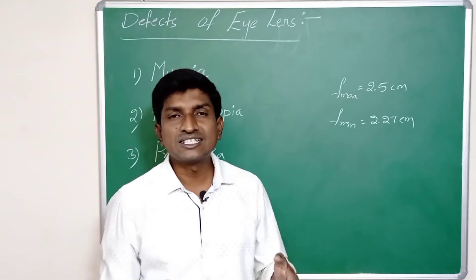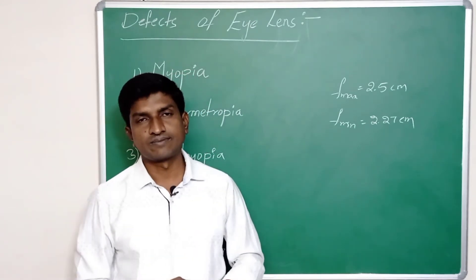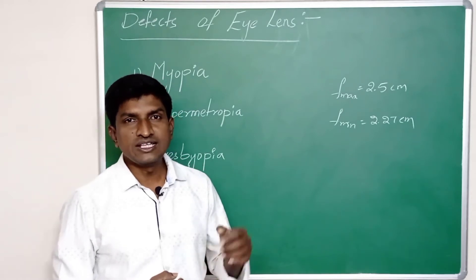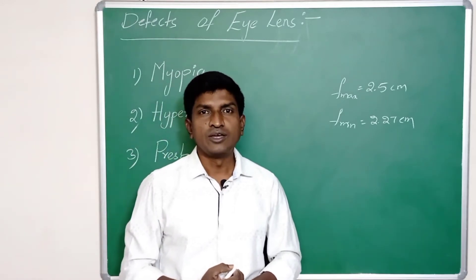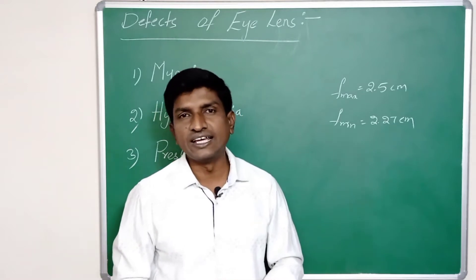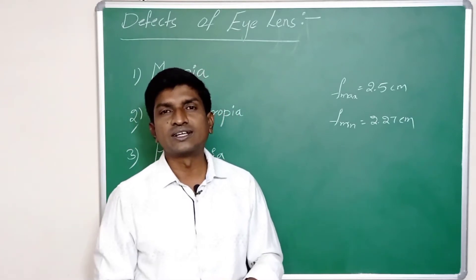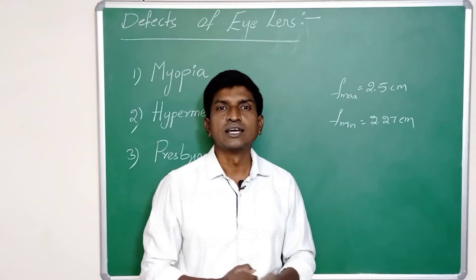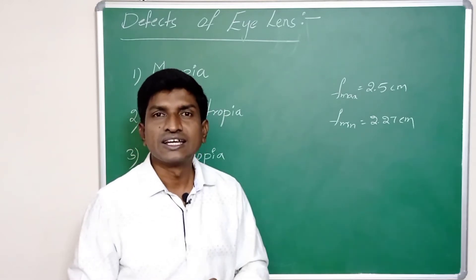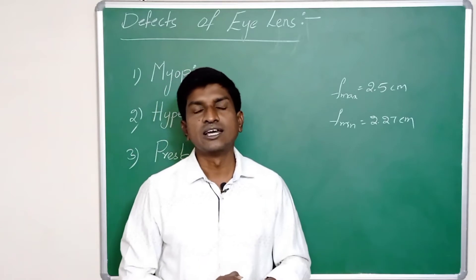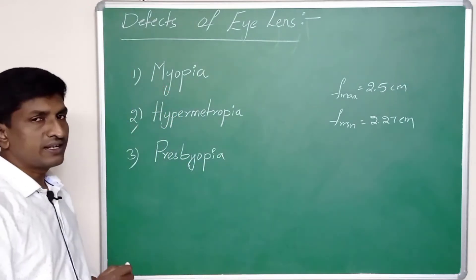If the lens is not able to change its focal length from maximum to minimum, we will face some problems in vision. When you observe an object, it appears unclear or blurred. This is because the accommodation ability of the lens decreases gradually. In this case we will face some eye defects.